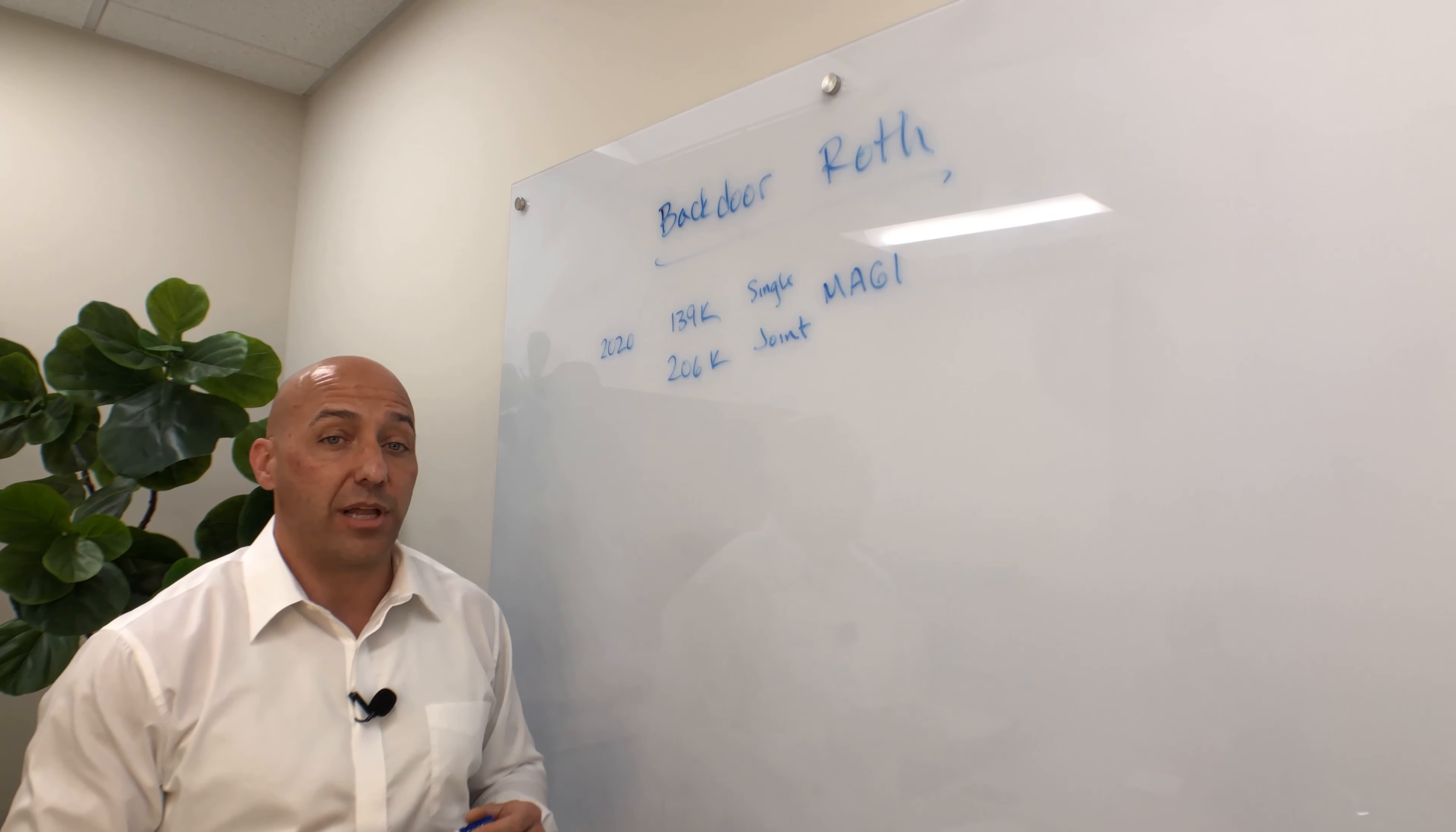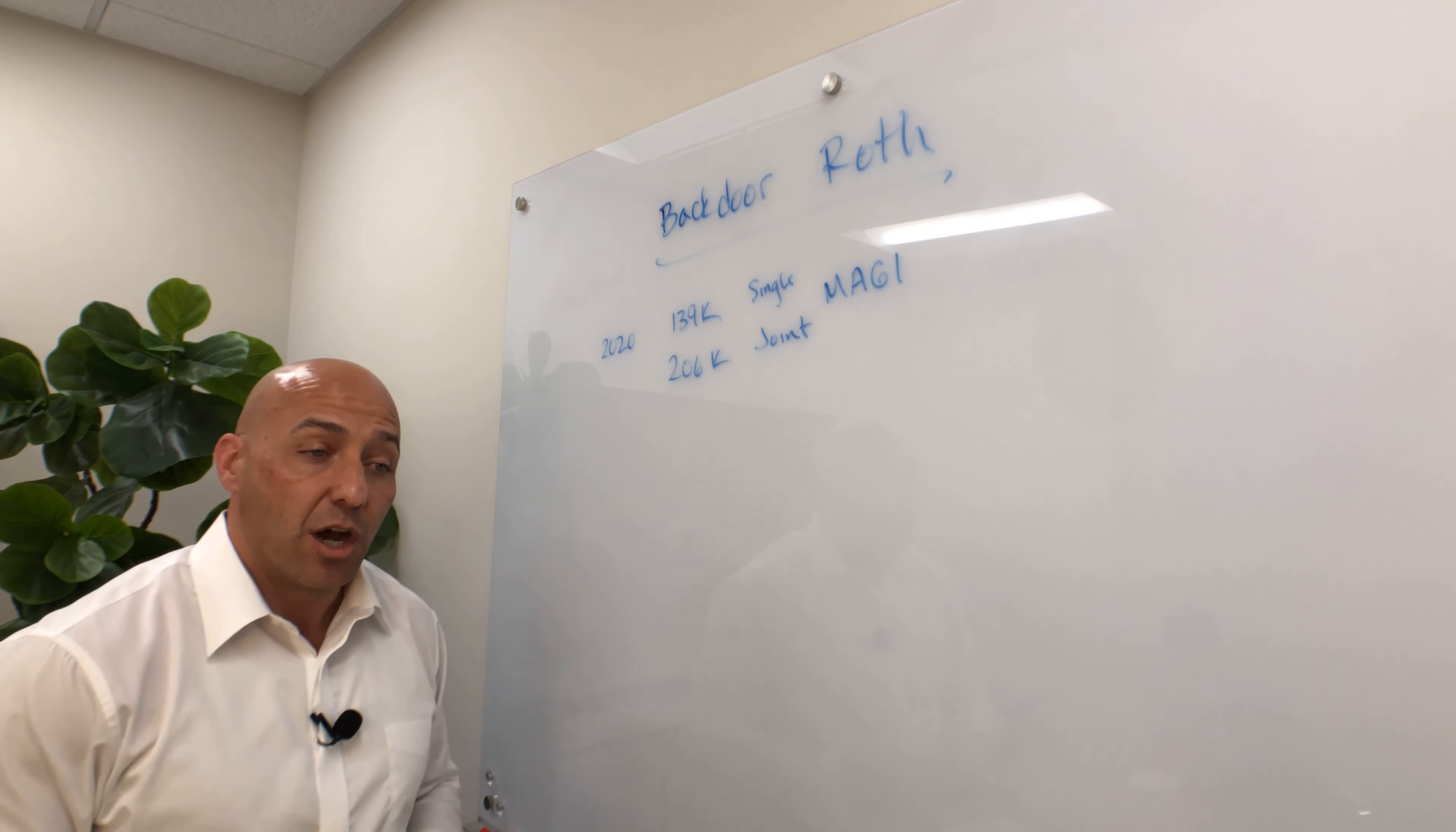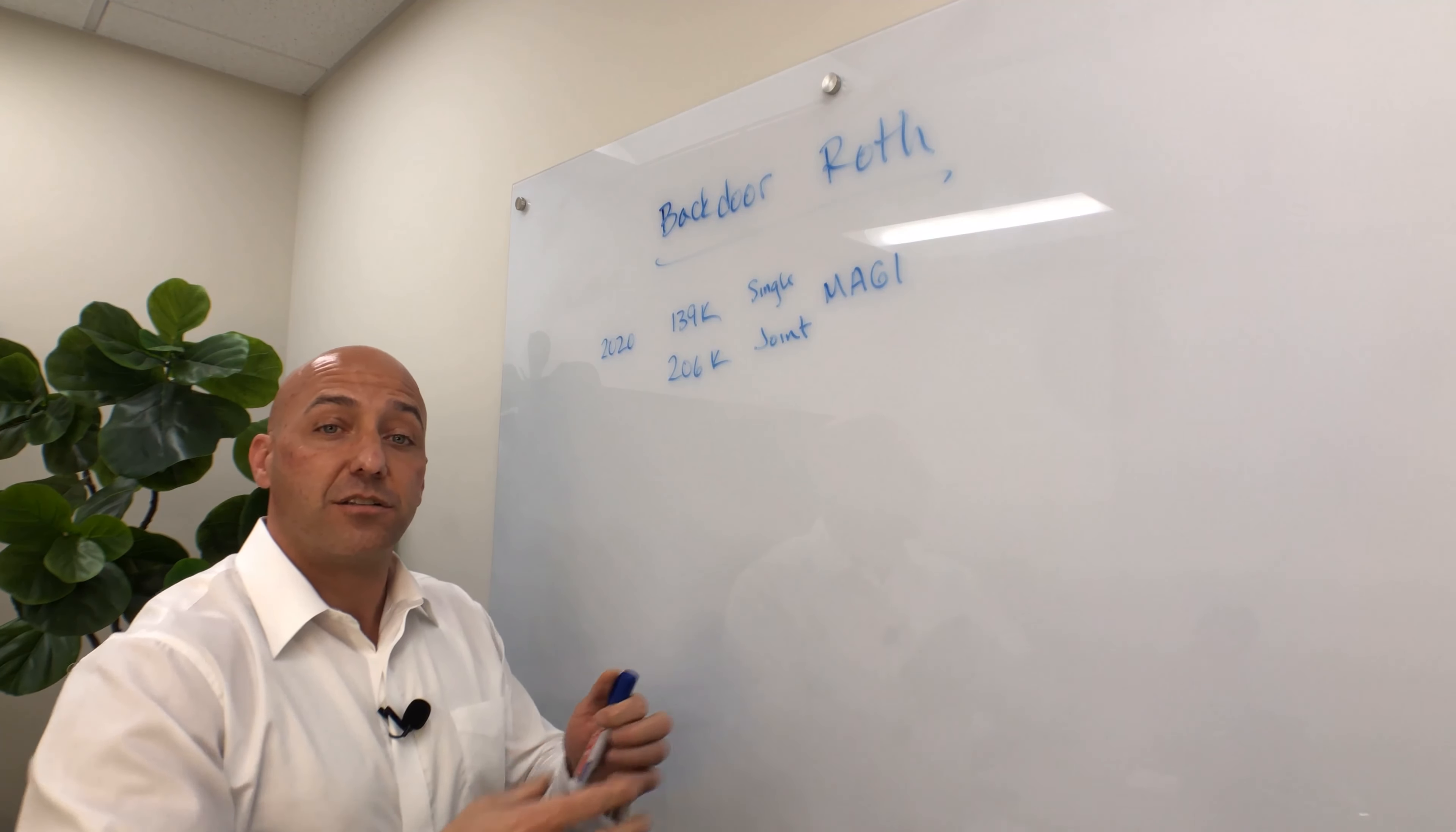Well, there's a tax loophole out there, and it's been around since 2010, basically, because in 2010 they changed the rules and said that there were no income limits on doing a Roth conversion.